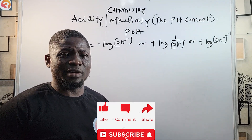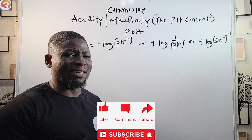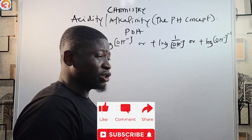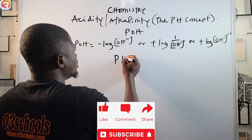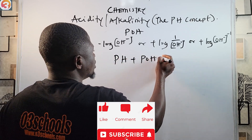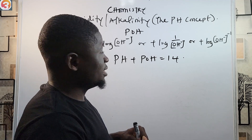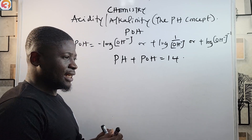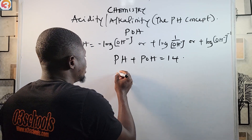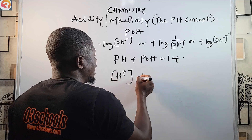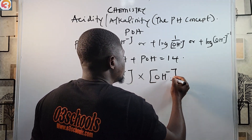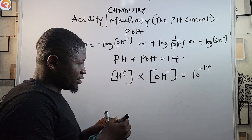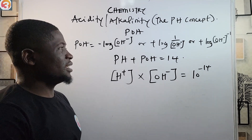There are important relationships between pH and pOH. In an exam context these are very useful: pH plus pOH equals 14. Also, hydrogen ion concentration times hydroxide ion concentration equals 10 raised to the power of minus 14.